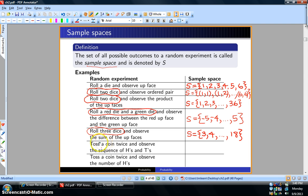Next sample space: toss a coin twice and observe the sequence of heads and tails. In this case, the sample space is heads-heads (that's one possibility), heads-tails, tails-heads, and tails-tails.